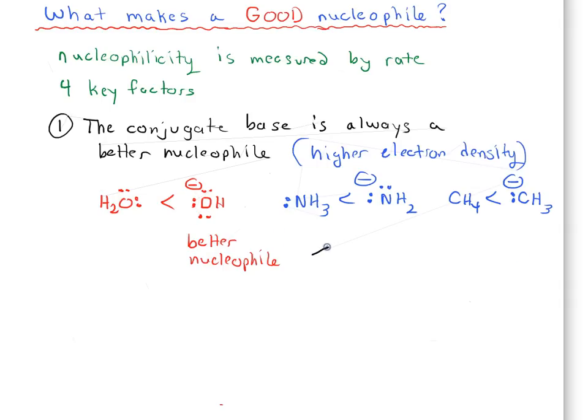So the conjugate base is always a better nucleophile, and this applies across the board. Whatever species you have, if you take a proton away from it, it's going to become a better nucleophile. And therefore, through our definition of nucleophilicity, it's going to be a faster reaction.